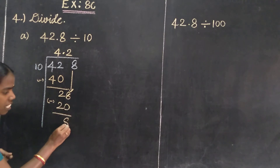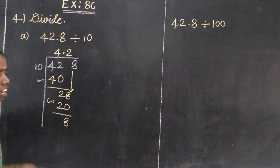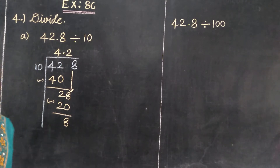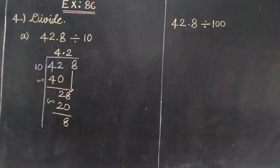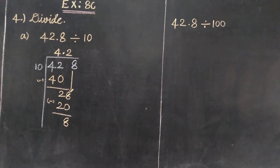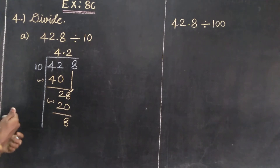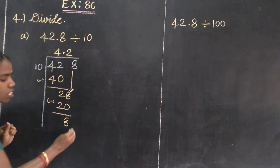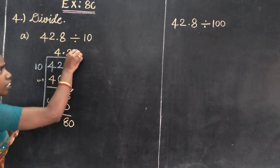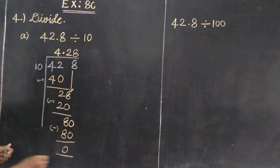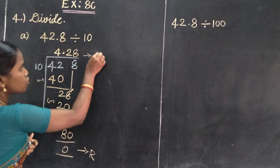So 8 minus 0 gives remainder 8. Then in this remainder, we continue the division. The remainder is 8, so we add a 0 — join 80. How many times does 10 go into 80? 8 times — 8 times are 80. So add 0 to the dividend. The remainder is 0. The quotient is 4.28.